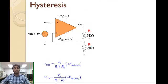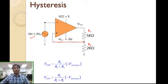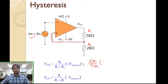Let's consider this particular circuit. We have an input voltage of 3 volts peak, VCC of 5 volts, and -5 volts. There is a voltage divider network with R1 and R2 connected at the output using positive feedback. The UTP is calculated as R2 (2kΩ) over R1 plus R2 (7kΩ), multiplied by the maximum output voltage (VCC = 5V), which gives approximately 1.4 volts.